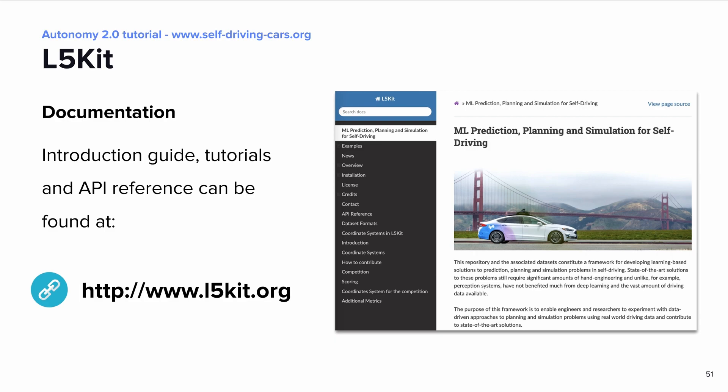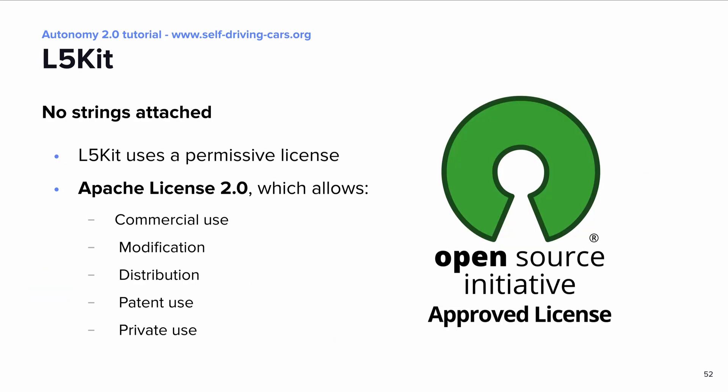You can find more information about L5Kit in our documentation website at l5kit.org. On this website, you will be able to find introductory materials, tutorials, and API reference documentation. L5Kit also uses a permissive license called Apache License 2.0. The Apache License is an OSI-approved license. With it, you are allowed to have commercial usage, modify, distribute, and have patent and private uses as well.